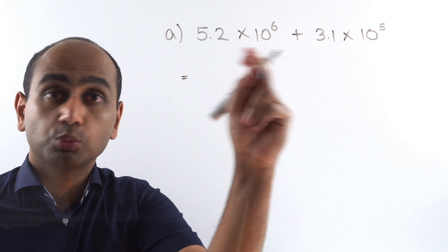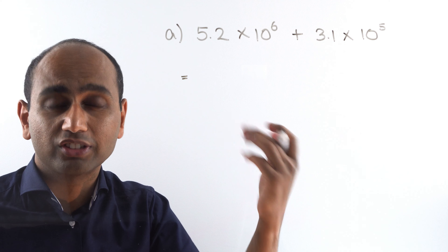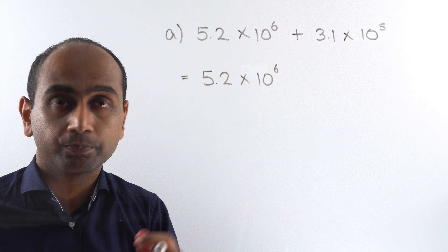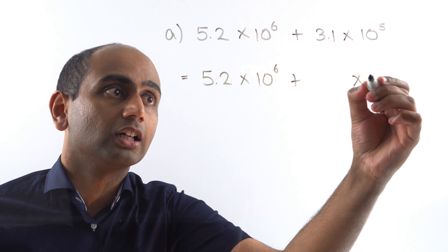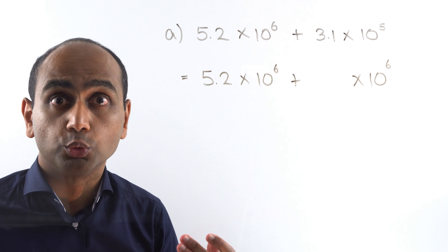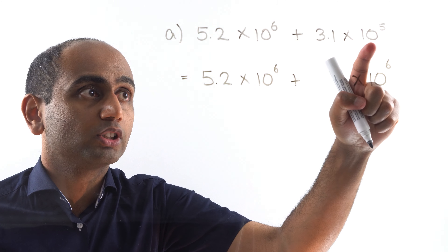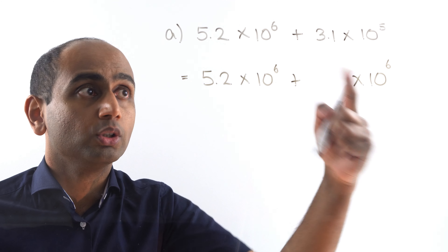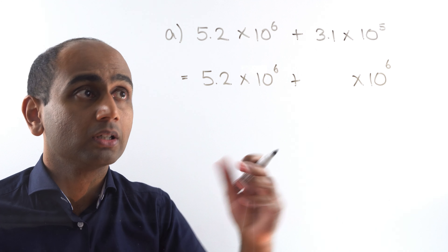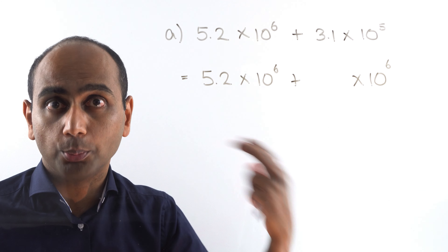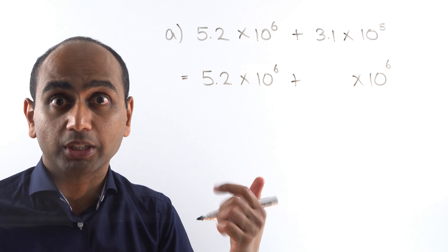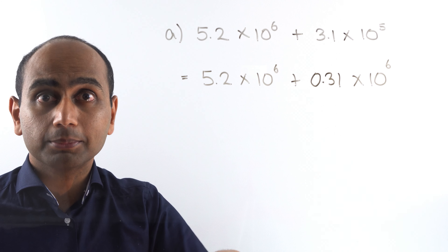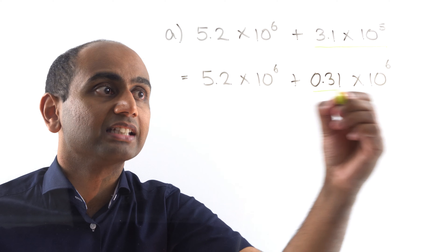I'm going to keep the first one the same because it has the higher power of 10, so that's 5.2 times 10 to the power of 6. Now this number here needs to be something times 10 to the power of 6 too. To go from 10 to the power of 5 to 10 to the power of 6, I've had to multiply by 10. To keep this number worth the same, I need to divide the other part by 10 to compensate. 3.1 divided by 10 is 0.31.